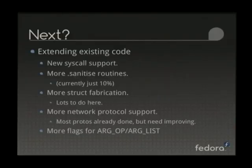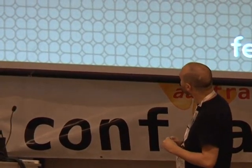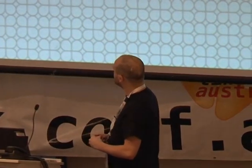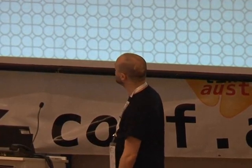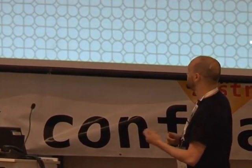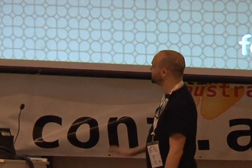It's a lot of work just maintaining what I have so far. Every time a new system call gets added upstream, I have to add support for it. Only 10% of the system calls currently have sanitize routines; some could probably use at least a basic one to improve chances of getting further into the function. More struct fabrication like the sock_addr thing is needed — there are whole bunch of types the kernel expects where we're currently passing garbage rather than realistic-looking structures. The sock_addr struct fabrication needs even more extension for finishing off remaining network protocols — only a few left like Bluetooth.